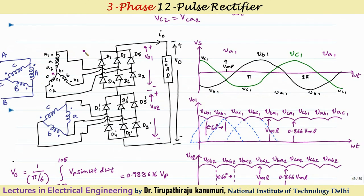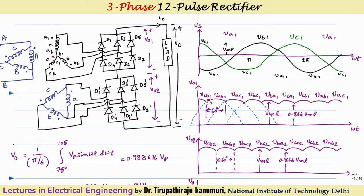The connection diagram works as follows: the first secondary winding, the star winding, is connected to one set of bridge diode rectifiers with diodes D1, D2, D3, D4 conducting in sequence. This is connected in series with another bridge rectifier set formed by the output of the delta connection. The output of the first bridge rectifier is represented by V01 and the second by V02.